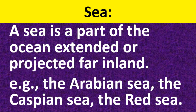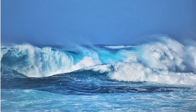Let us know about sea. A sea is a part of the ocean that is extended or projected far inland. Examples include the Arabian Sea, the Caspian Sea, and the Red Sea. So a sea is a part of the ocean, but it extends up to and deep inside the land.